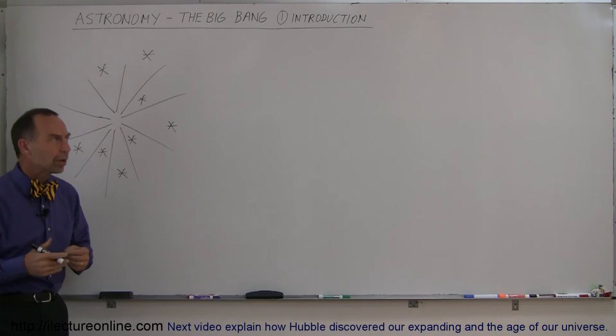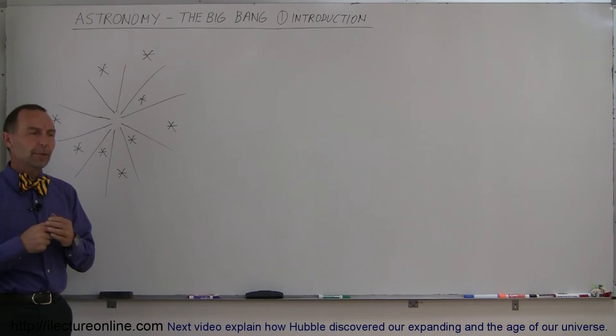So because of a number of observations, we began to realize that Einstein may be wrong on this one. It may have started with some sort of cataclysmic event that we currently call the Big Bang.